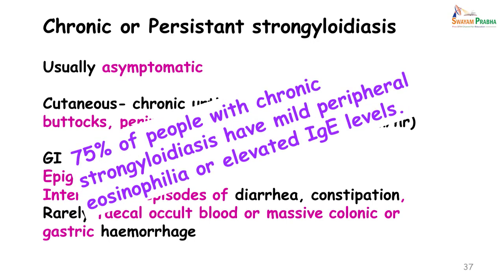75 percent of individuals with chronic strongyloidosis have mild peripheral eosinophilia and raised IgE levels.